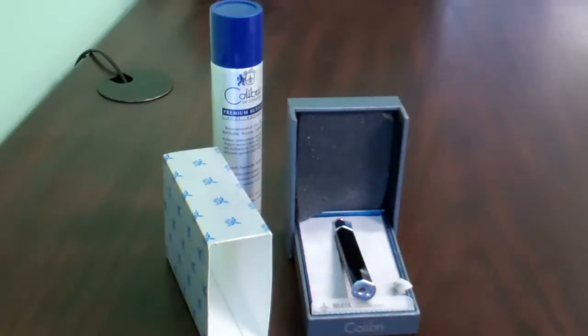Hi, welcome to eLighter's YouTube channel. This video is to demonstrate the proper usage of the Calibri Miata lighter, item code LTRL021106. This is for the black lacquer and polished chrome lighter that we have here.